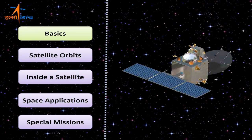This short video is divided into five major sections. In the first section we will understand the basics of satellites. Next we will touch upon satellite orbits and different types of orbits. In the third section we will look inside a satellite and understand how it is made, tested, and functions. Then we will move to applications of satellites and some special missions undertaken by ISRO.